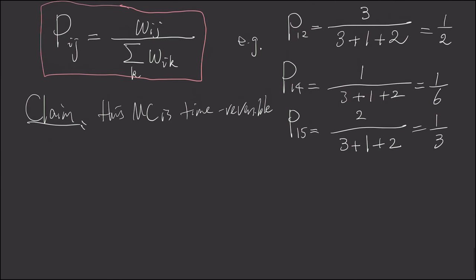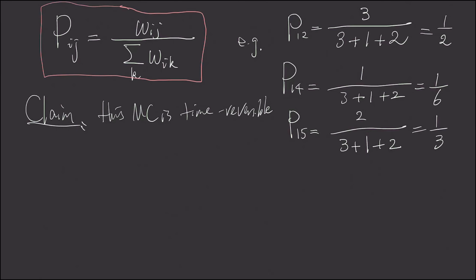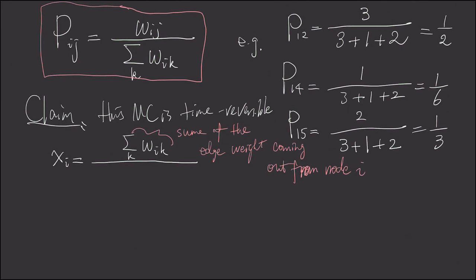To show that, I'll directly give you the stationary probability. So for a node i, we define xi as the following, which is the strength, the sum of strength. This is a sum of the strength of the edges coming out from node i.